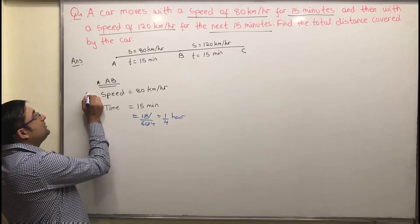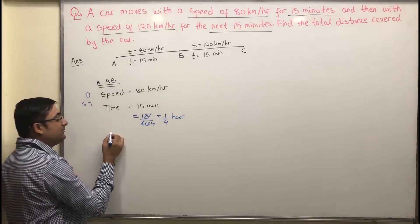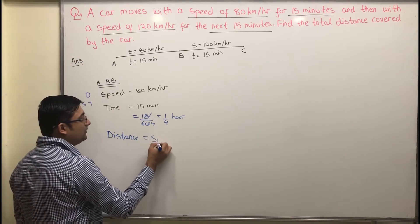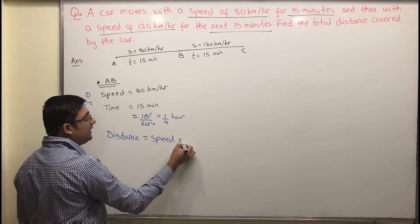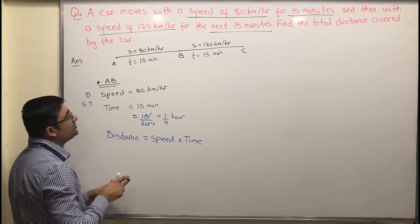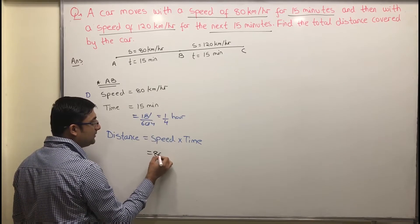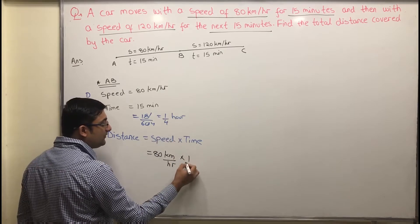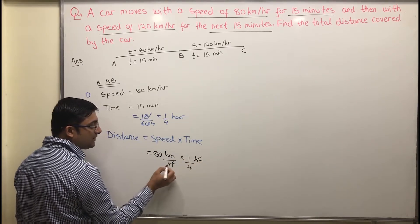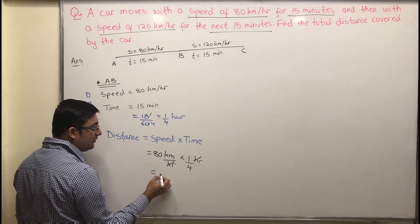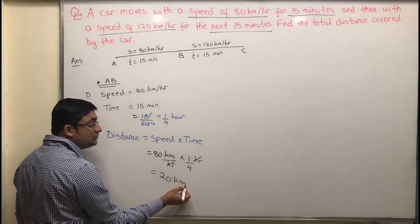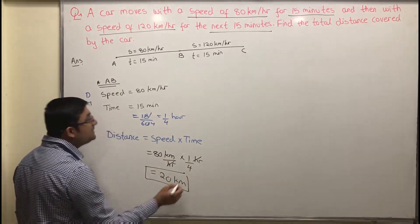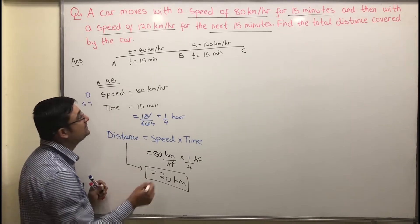Now apply the formula. Recall the triangle DST: distance equals speed multiplied by time. So distance equals 80 kilometers per hour multiplied by one-fourth of an hour. The hours cancel out, and 80 divided by 4 gives us 20 kilometers. So the distance from A to B is 20 kilometers.